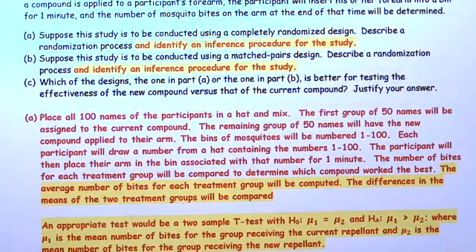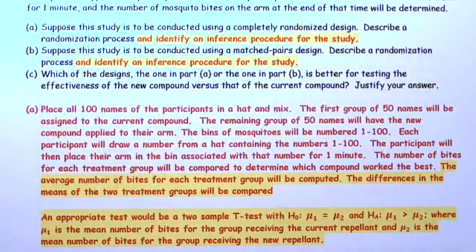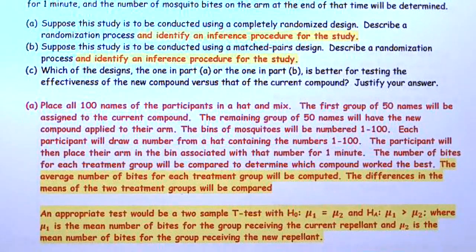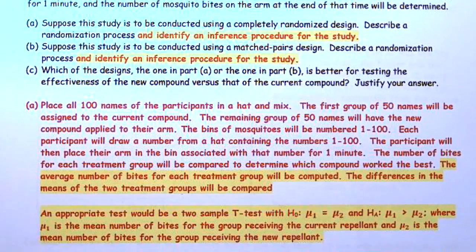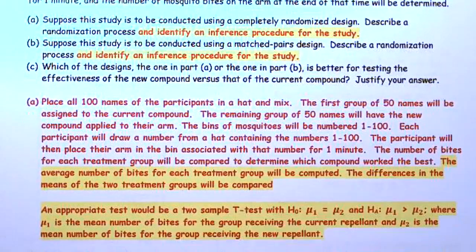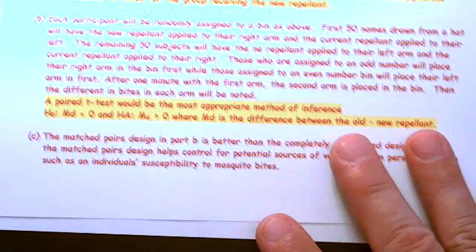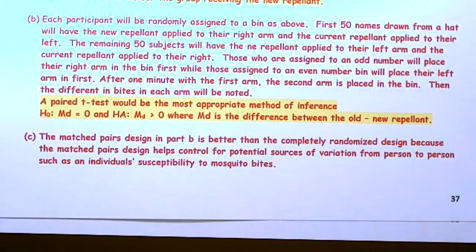Part C asks: which design — Part A's completely randomized or Part B's matched pair — is better at testing the effectiveness of the new compound? The matched pair design in Part B is better than the completely randomized design because the matched pair design helps control for potential sources of variation from person to person, such as an individual's susceptibility to mosquito bites.